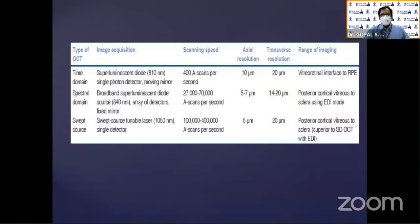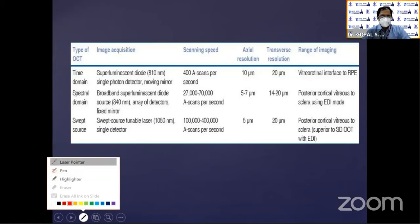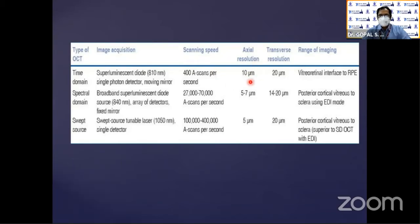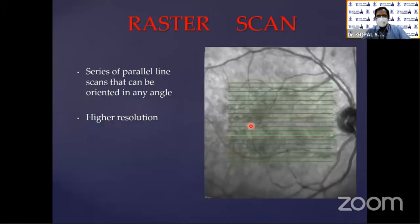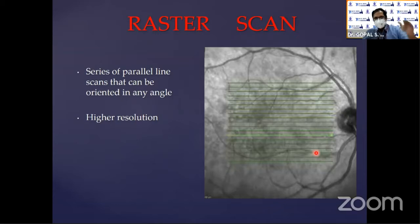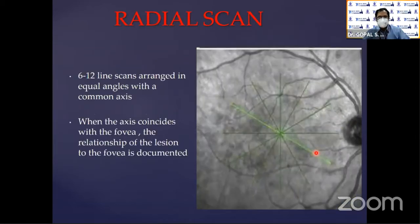In the time domain OCT, we have about 10 microns of resolution, which improves in spectral domain to about five to seven microns. In the new OCTs, it can go up to about three microns in resolution. These are some prototype models known as Heidelberg Spectralis and Cirrus. With raster line scanning, fine lines on the surface of the retina give good resolution from top to bottom.